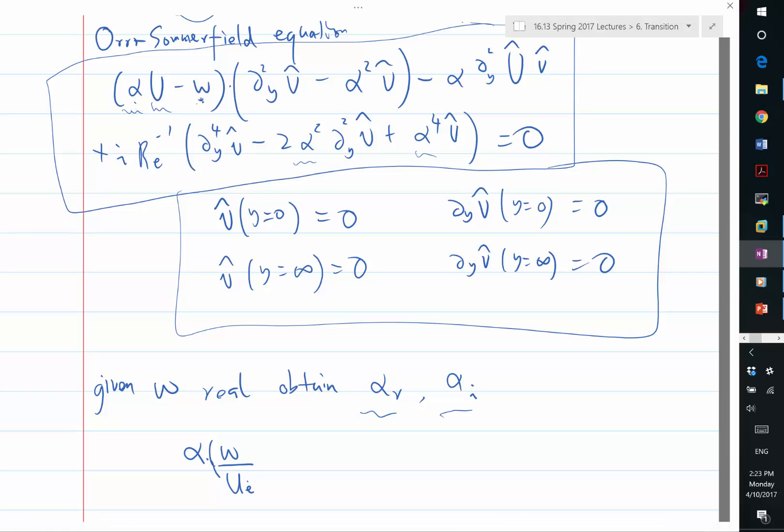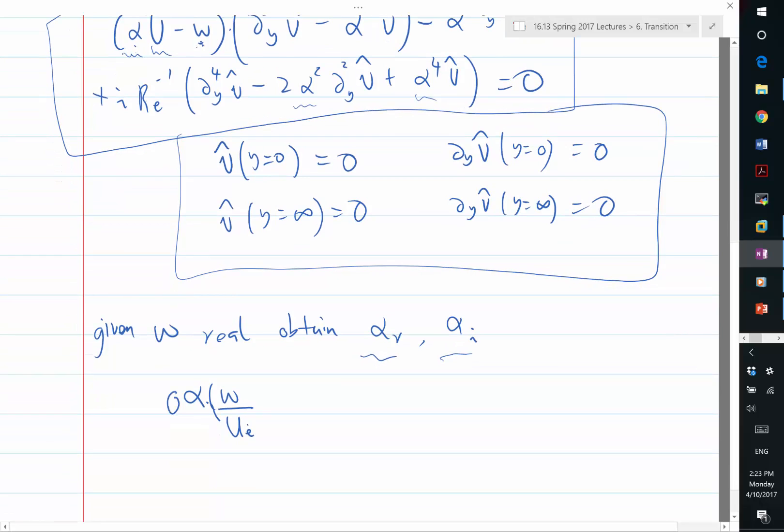What is the dimension of alpha? It's a wave number in space, it's per length. If you want to look at the non-dimensionalized alpha, you need to multiply that by a length scale. We only have boundary layer thickness, so let's use theta times alpha. Omega over Ue also needs to be multiplied by the same length scale to get a non-dimensional parameter. So theta alpha is going to depend on omega theta over Ue.